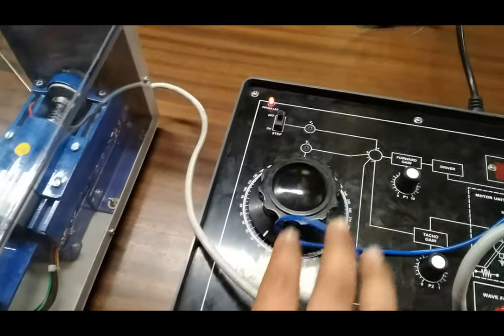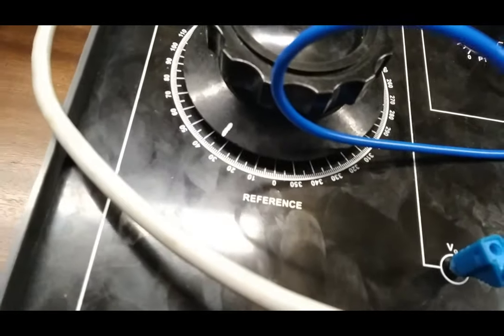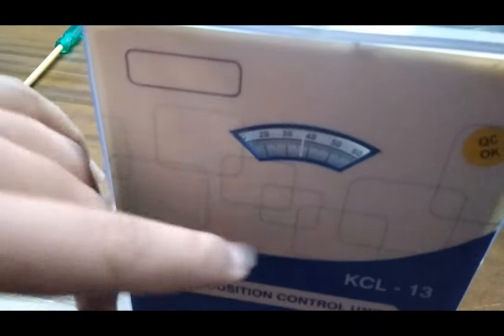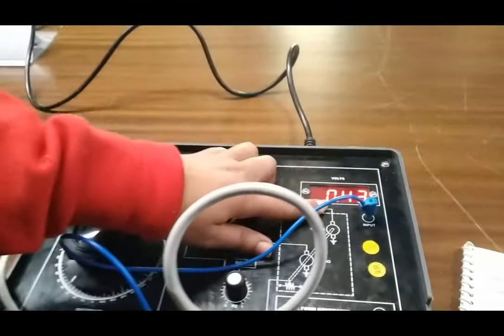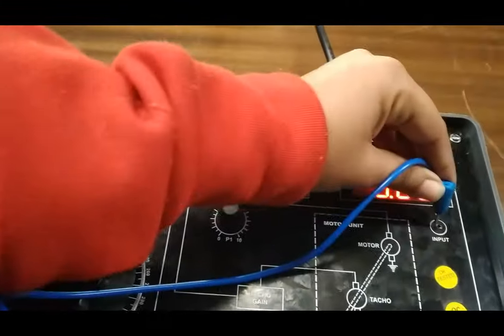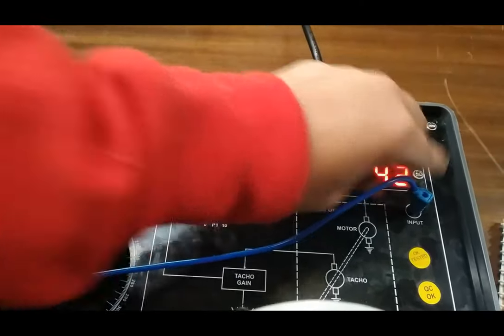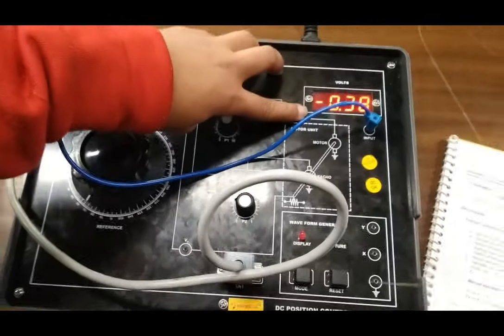At theta r equals 30 degrees, we see that theta 0 is 35 degrees. V0 is 0.43, and VR is minus 0.37.